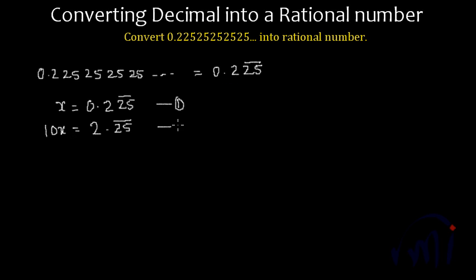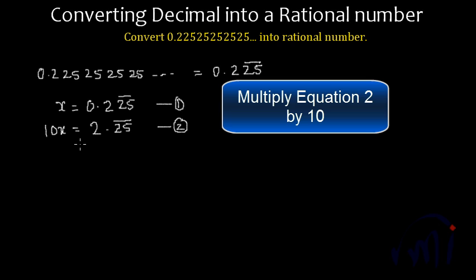And now if you see this form properly, you can solve it very easily now. What I have to do next? Next I have to multiply this by 100 so at least one set of these recurring decimals comes towards the left. So let's do that.